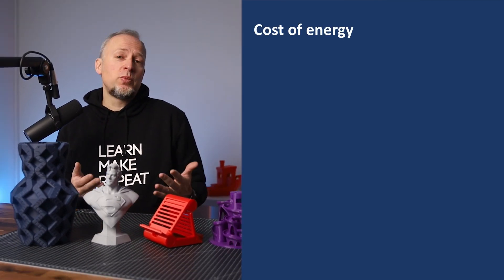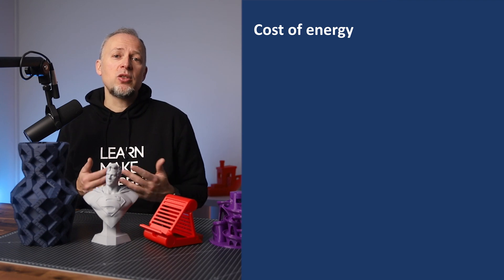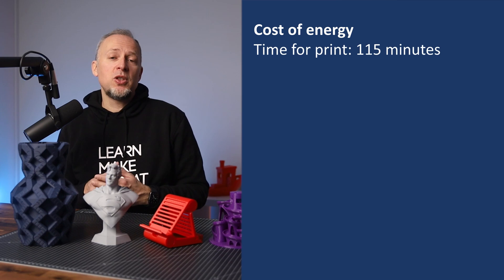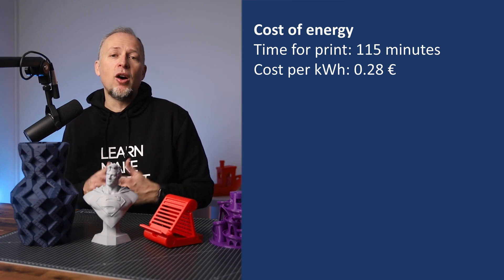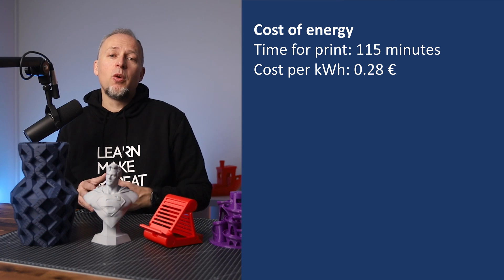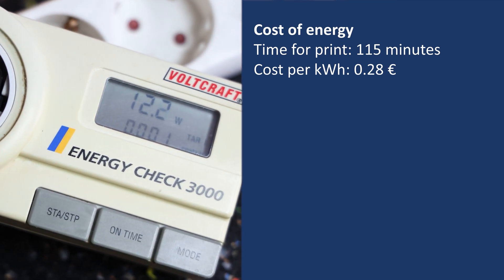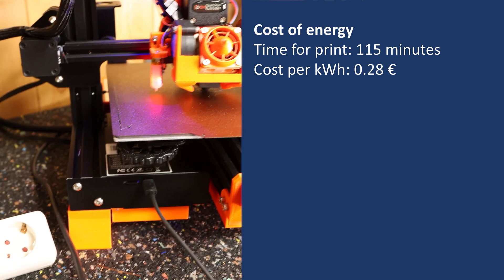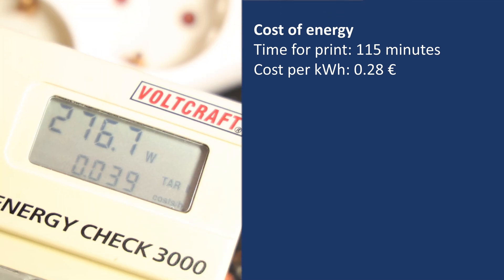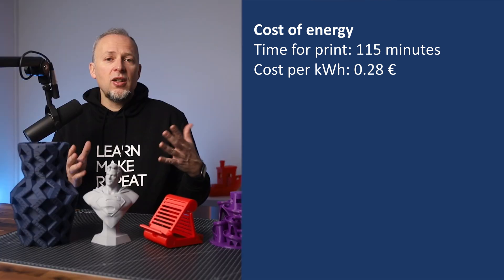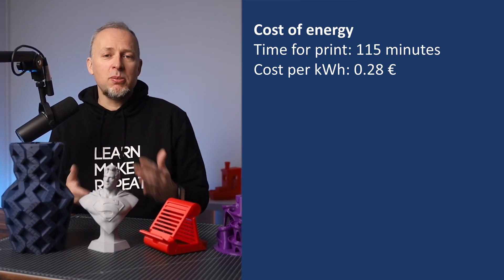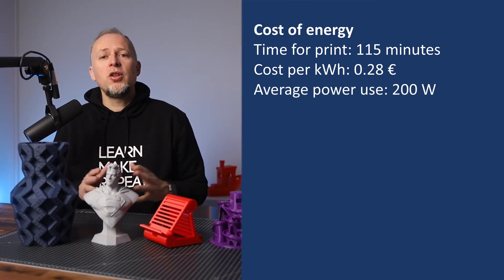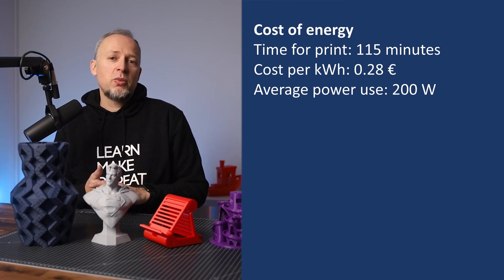The next number we need is how long the print is going to take, because your printer consumes energy and we should know how much the energy costs for this print. The print takes 1 hour 52 minutes, which is 112 minutes. We pay 28 euro cents per kilowatt hour of energy. We should also figure out how much energy the printer uses when it's running, so let's attach a power meter and see the power consumption. This Ender 3 Pro while printing and heating consumes about 270 to 290 watt peak and 60 watt at the low end. A longer measurement got me to an average of about 180 to 190 watt, maybe even slightly higher for a PLA print. So let's take a conservative estimation of 200 watt, but your measurements might differ.